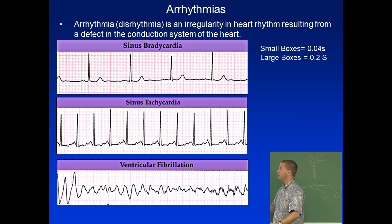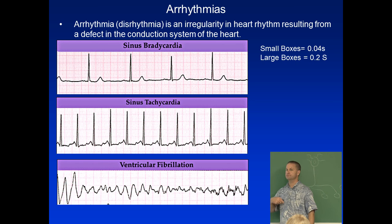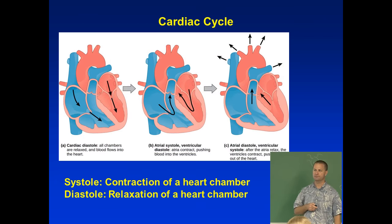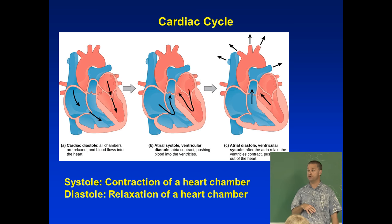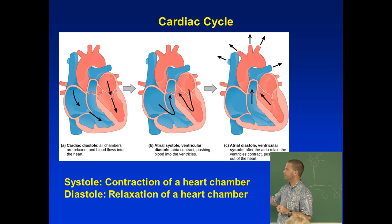There are two events in the heart: an electrical event followed by a mechanical (contraction) event. The P wave (atrial depolarization) is followed by atrial contraction; the QRS wave (ventricular depolarization) is followed by ventricular contraction. These together make up what we call the cardiac cycle, which involves systole and diastole.